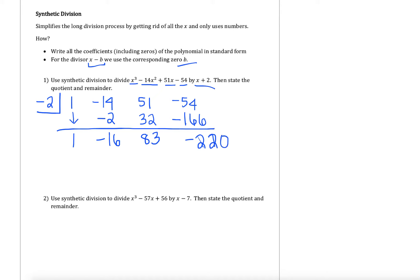I know I'm done once I finish off that last row. I'm going to box off this last number because it's an important term for us. The last number is actually our remainder. The other three numbers that are left over are going to become the coefficients on our quotient. So here I have a 1, a negative 16, and an 83, going from highest to lowest coefficient in standard form. We started off with an x cubed and divided through by a linear term, so dividing x cubed by x leaves us with an x squared. That means this first number of 1 is our coefficient on an x squared term.